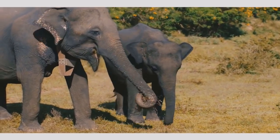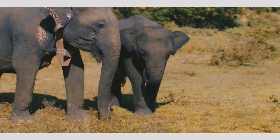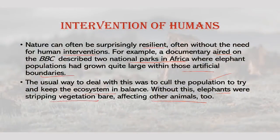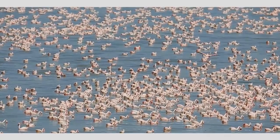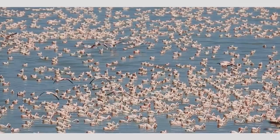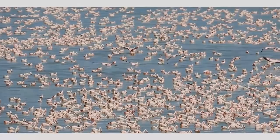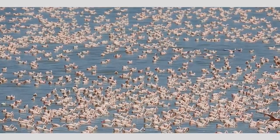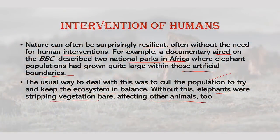A few years later, they found the park with the culled population had remained in poor condition. The park where things were left alone had naturally regenerated. The large elephant populations eventually reduced in number as they undermined their own resource base. The natural pace at which this happened allowed vegetation to grow back. Other wildlife grew in numbers and the ecosystem was generally back in balance. This is a beautiful example of interdependency versus human intervention.